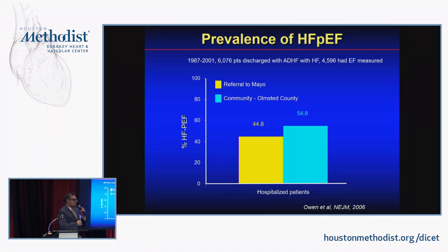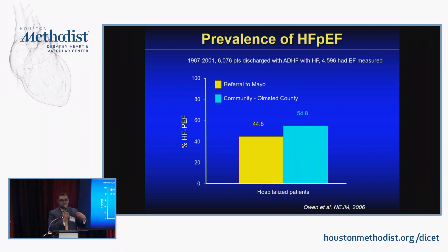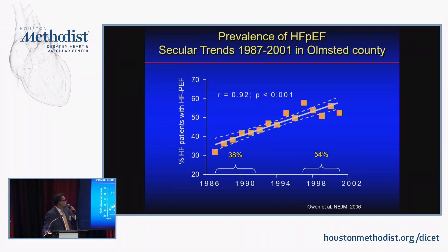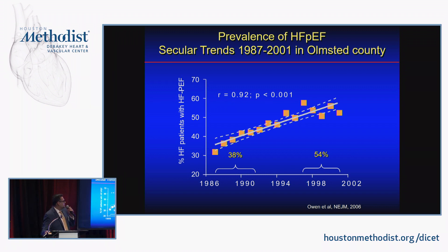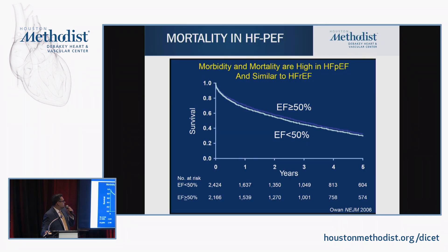In terms of prevalence, whether in the community or as hospital admissions for heart failure, HFpEF accounts for about 50% of the heart failure burden. In the current era, 50% of heart failure admissions are due to heart failure with preserved ejection fraction.